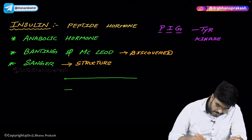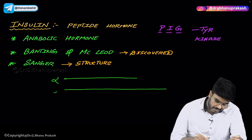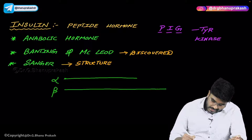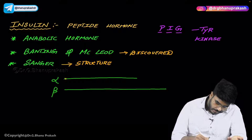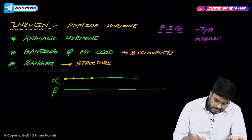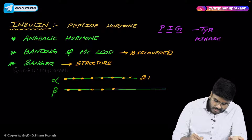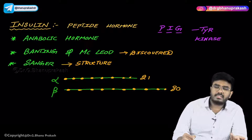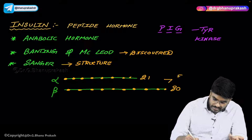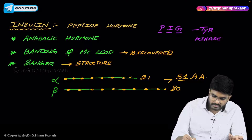Insulin is made up of two chains: an alpha chain and a beta chain. The alpha chain has 21 amino acids. The beta chain is a bigger, longer chain with 30 amino acids. So 30 plus 21 — in total, insulin is a hormone made up of 51 amino acids.